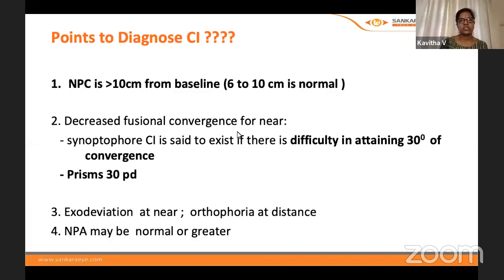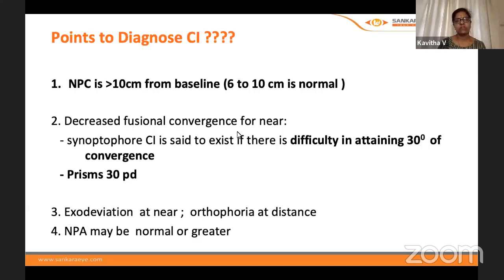To diagnose convergence insufficiency: if the NPC is greater than 10 cm, we suspect convergence insufficiency. Measured with the RAF rule, the ideal NPC range is around 6 cm — anything beyond 10 cm raises suspicion.